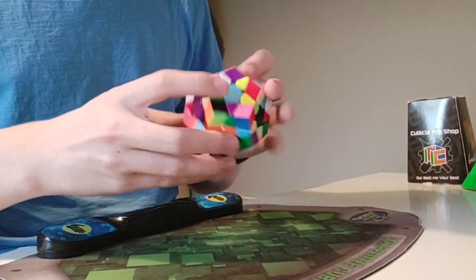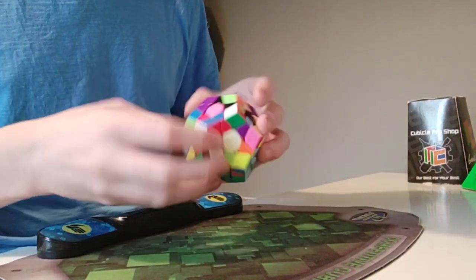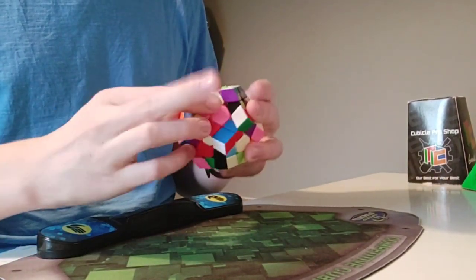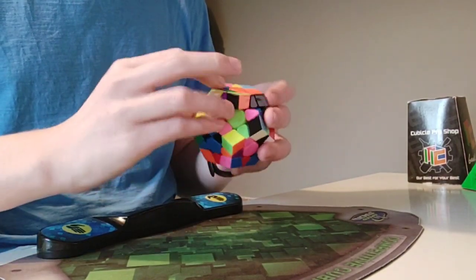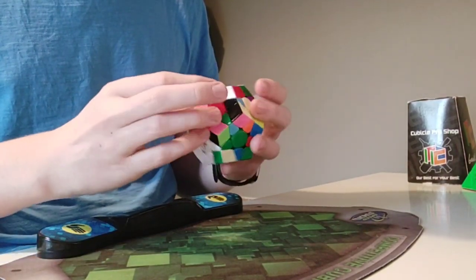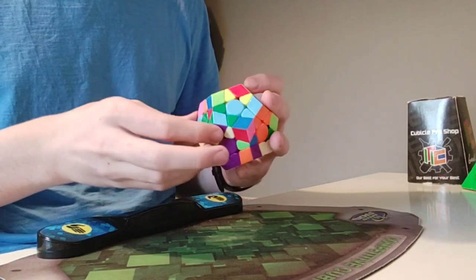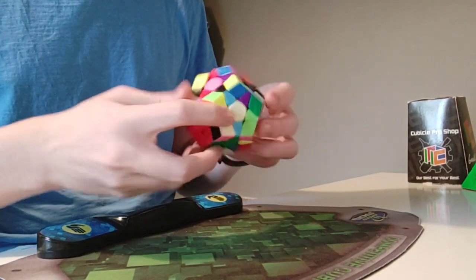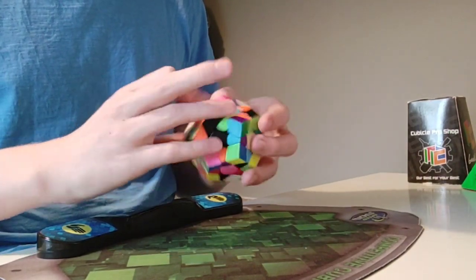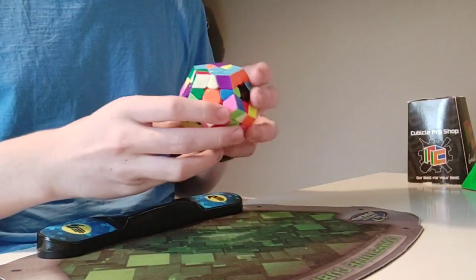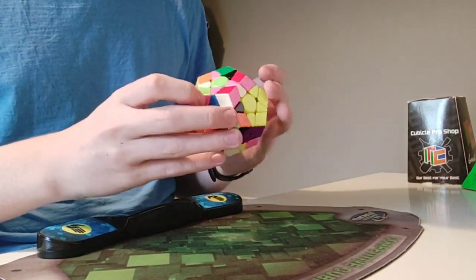For this reason, and the fact that DNM37 lasts longer, I would still recommend that if you want a fast lube rather than Stardust. However, if all you want is to make your cubes as fast as possible, Stardust is your best bet, so it's still a good choice if that is your preference.